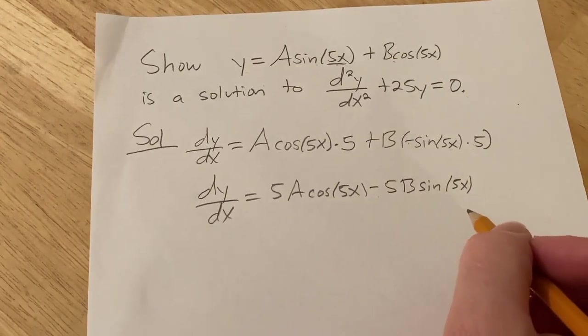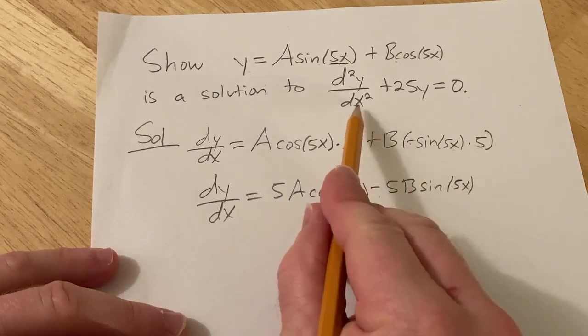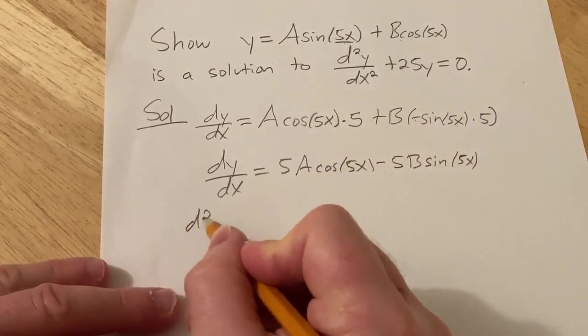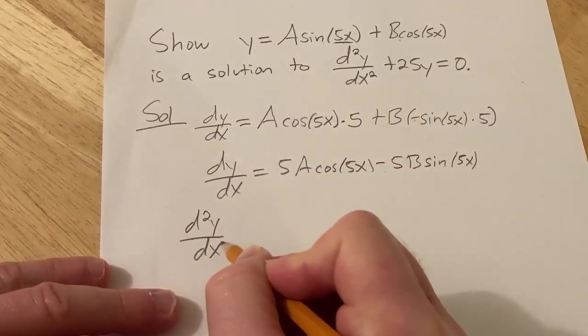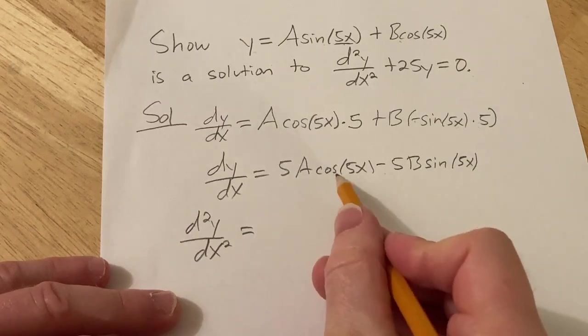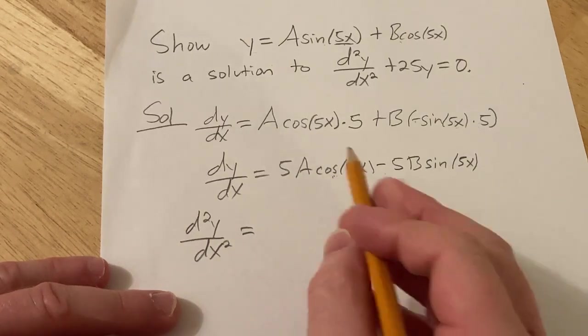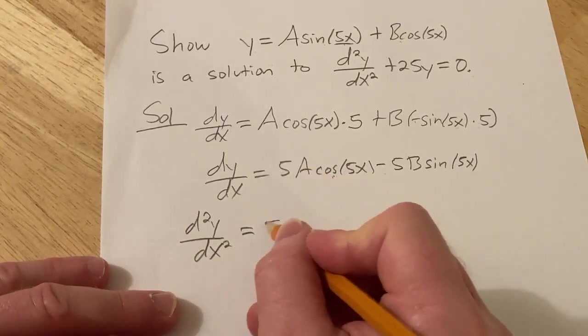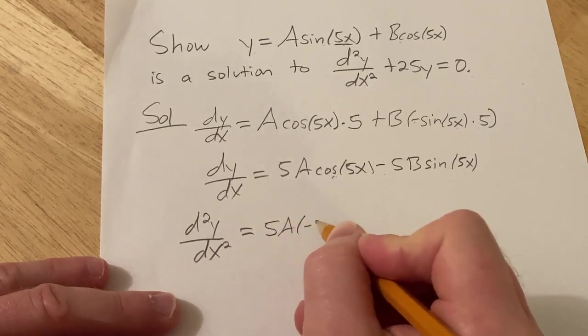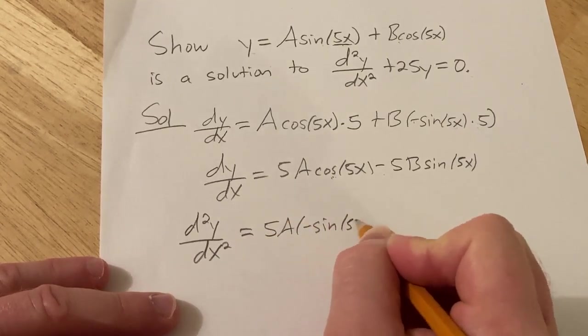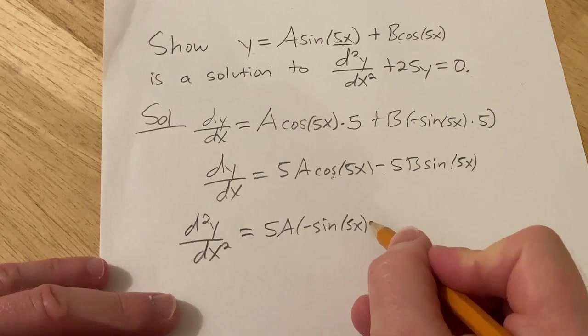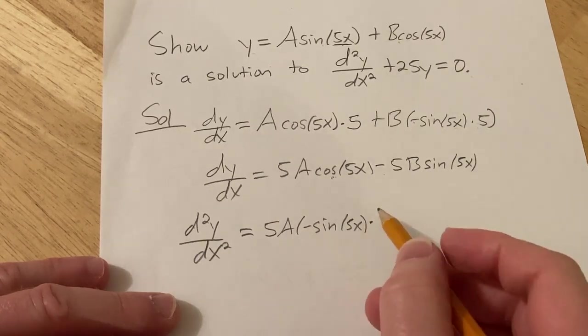Okay, so now we have to do it again because we have a second derivative. So the second derivative with respect to x. Taking the derivative of cosine, we get negative sine. So this will be 5A, negative sine 5x. And again, chain rule tells us we multiply by the derivative of the inside function, which is 5.